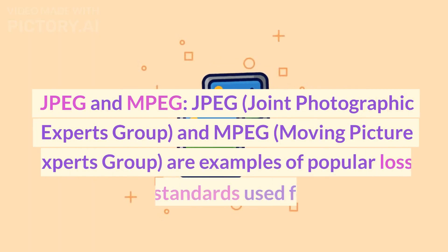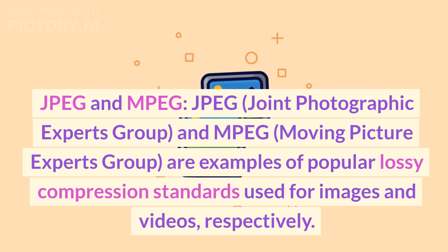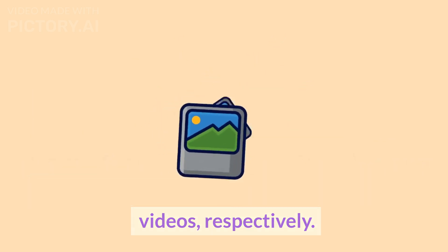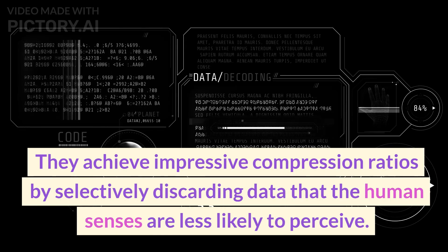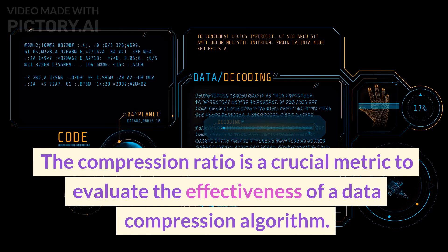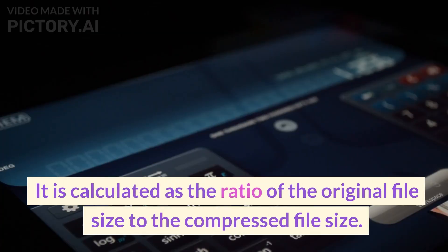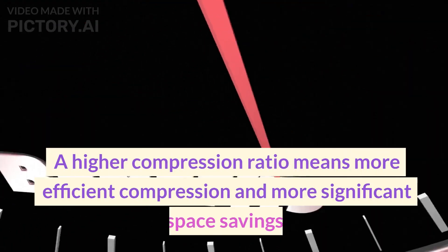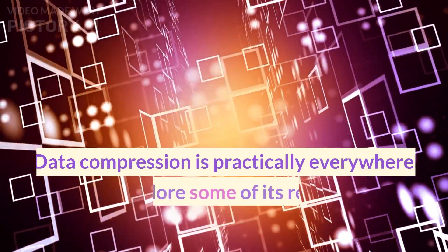JPEG (Joint Photographic Experts Group) and MPEG (Moving Picture Experts Group) are examples of popular lossy compression standards used for images and videos, respectively. They achieve impressive compression ratios by selectively discarding data that the human senses are less likely to perceive. The compression ratio is a crucial metric to evaluate the effectiveness of a compression algorithm — it's the ratio of the original file size to the compressed file size. A higher compression ratio means more efficient compression and more significant space savings.